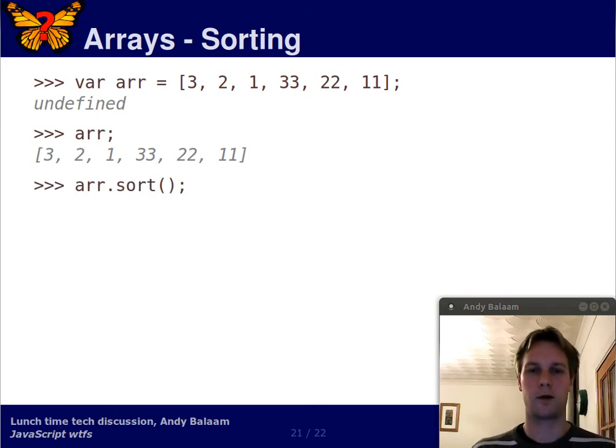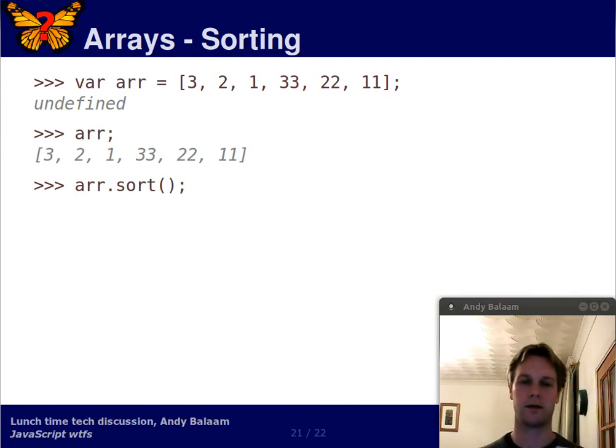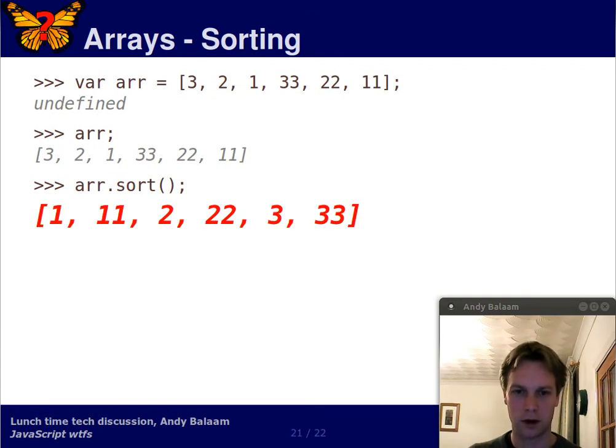So, what happens when we sort this array? So, the sort function sorts in place. It doesn't return the sorted version of the array. It sorts it in place, which is sometimes needed for efficiency. So, it's a reasonable choice. Yeah, functional people won't like it. What do you get back?